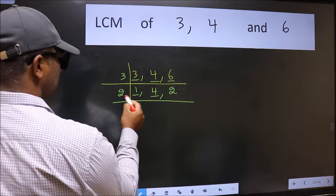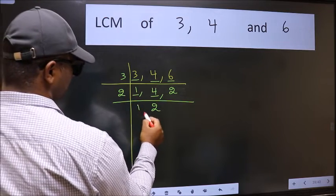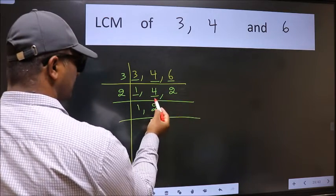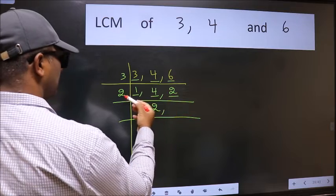4 is 2 times 2 is 4. The other number 2, when do we get 2 in 2 table?